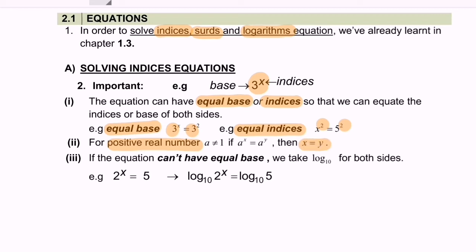If the equation can't have equal base, we take log to the base 10 for both sides. For example, 2 to the power of x is equal to 5. From here, we can say the base for the left hand side is equal to 2 and the base for the right hand side is equal to 5. So there is no equal base or equal indices. So what we have to do is we have to log both sides.